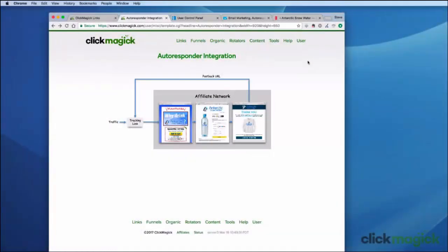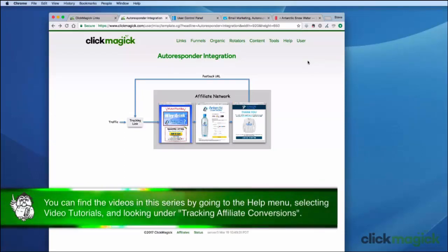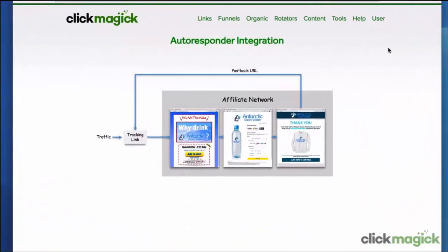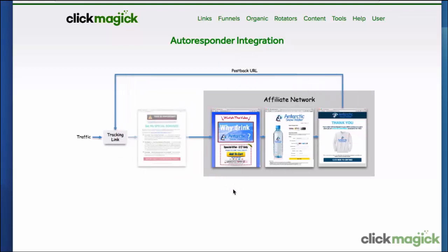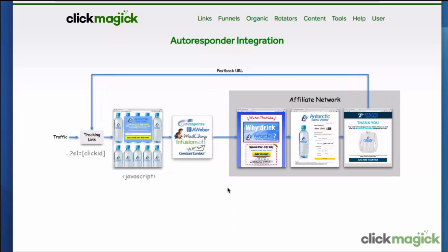Hi, this is Steve and in this video I'm going to show you how to integrate an opt-in form with your affiliate network. For this video I'm going to assume that you've watched both the video on integrating a tracking link with an affiliate network and integrating a landing page with an affiliate network. The first video showed you how to pass a click ID from your tracking link to your affiliate network, and also how to set up a post back URL so you could track sales conversions in your ClickMagick stats. The second video showed you how to pass a click ID through a landing page using ClickMagick JavaScript code and then onto your affiliate network. In this video I'm going to show you how to pass the click ID from your tracking link through an opt-in page and then onto your affiliate network.